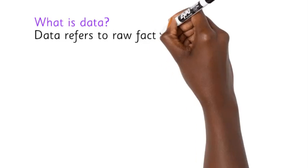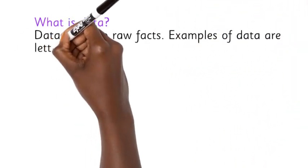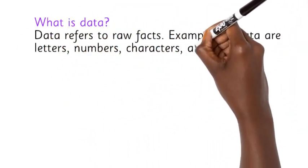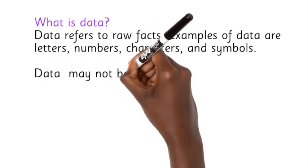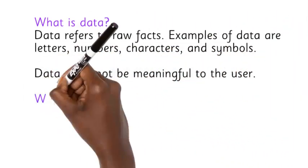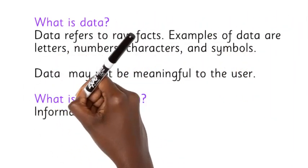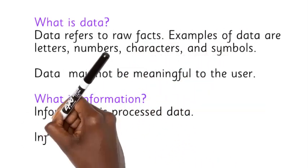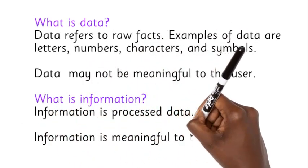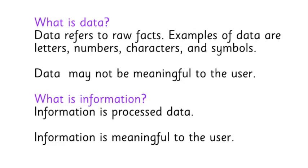What is data? Data refers to raw facts. Examples of data are letters, numbers, characters, and symbols. Data may not be meaningful to the user. What is information? Information is processed data. Information is meaningful to the user.